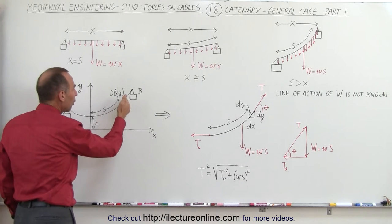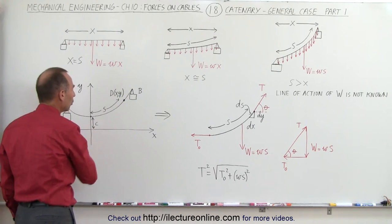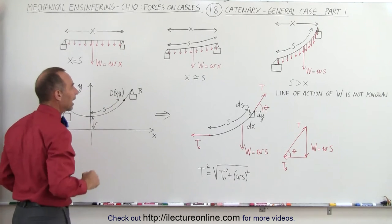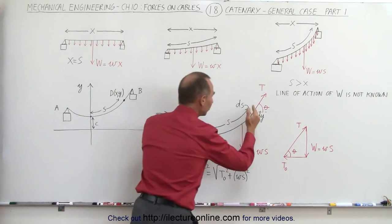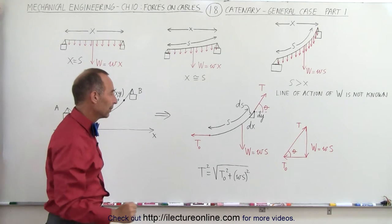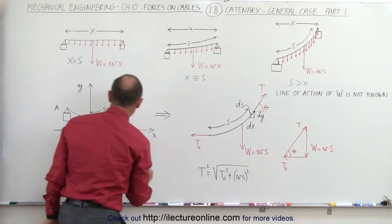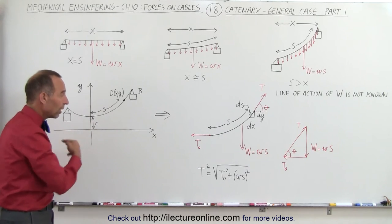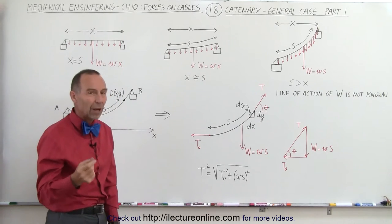Let's pick any arbitrary point on the cable at position x, y relative to the origin. This gives us the arc length s of that piece of the cable. If we take that piece and examine all forces acting on it: at the lowest point the only tension is in the horizontal direction — let's call that T₀ — and that T₀ will be the lowest tension point on the entire cable.